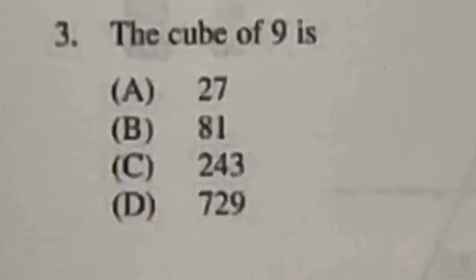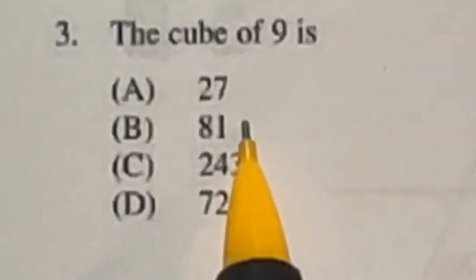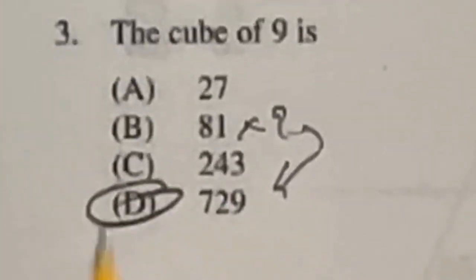What is the cube of 9? Well, the cube just means you multiply that number by itself three times. So 9 times 9 is 81. But then times another 9 is going to give me 729, which is answer D.